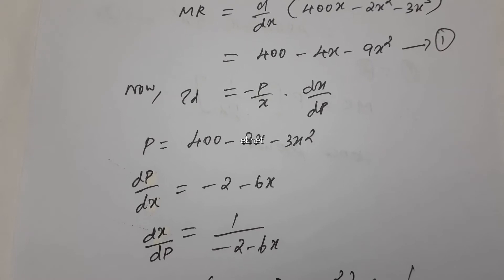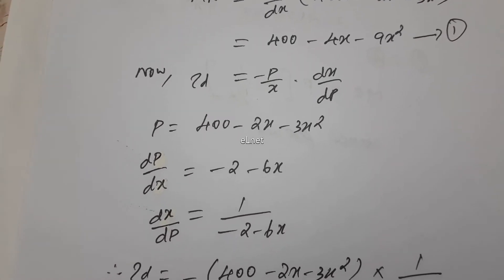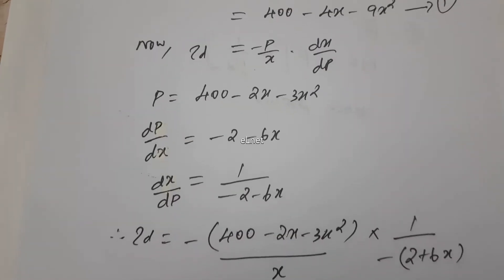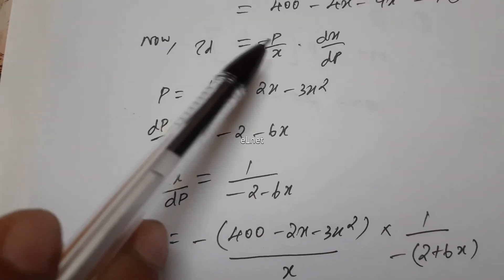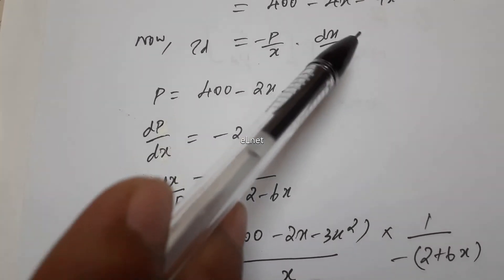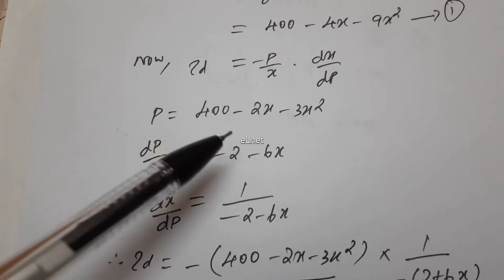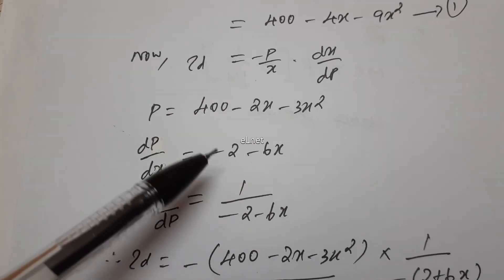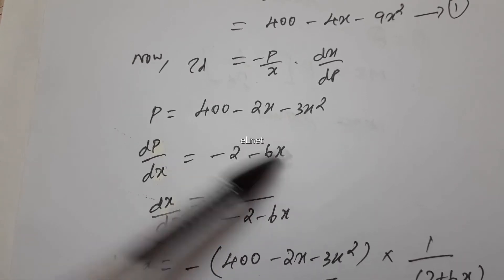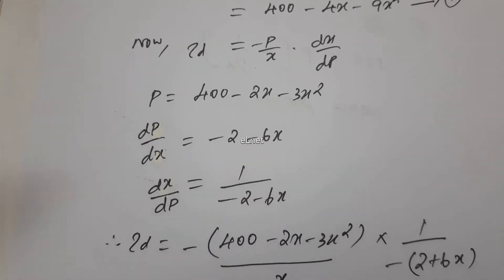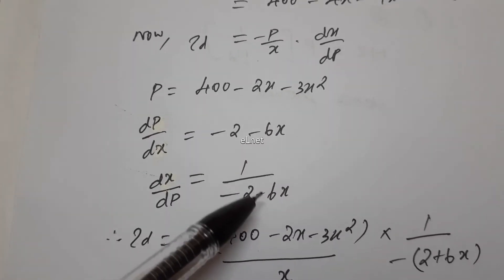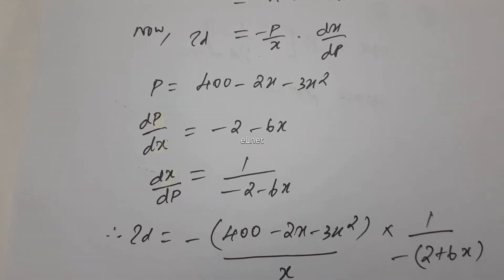Next, P times 1 minus 1 by eta D. First, eta D is equal to minus P by x into dx by dP. So, P is given: 400 minus 2x minus 3x squared. dP by dx is equal to minus 2 minus 6x. Therefore, dx by dP is equal to 1 over dP by dx.